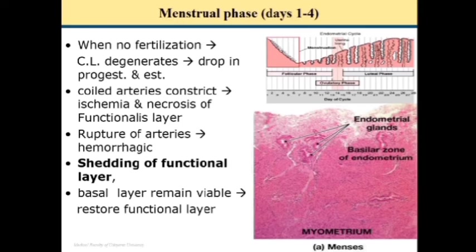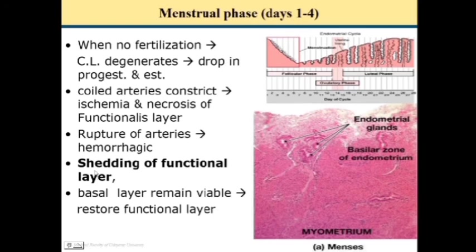From day one to day four is the menstrual phase, which occurs when there is no fertilization. If fertilization did not occur, the corpus luteum degenerates, causing a drop in progesterone and estrogen levels. The coiled arteries constrict, leading to ischemia and necrosis of the functional layer. This is followed by rupture of the arteries, hemorrhage, and bleeding — due to shedding of the functional layer of the endometrium. The basal layer remains viable for restoration of the functional layer.